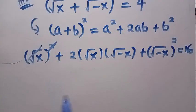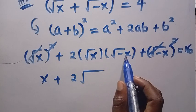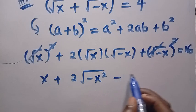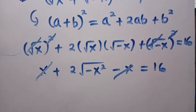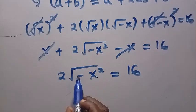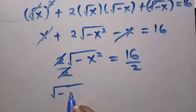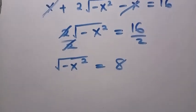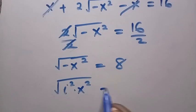The roots cancel with the squares: x plus 2 times square root of (x times minus x) plus (minus x) equals 16. The x and minus x cancel each other, leaving 2 times square root of minus x squared equals 16. Dividing both sides by 2, we get the square root of minus x squared equals 8. Now minus 1 can be written as i squared, so we have the square root of i squared times x squared equals 8.